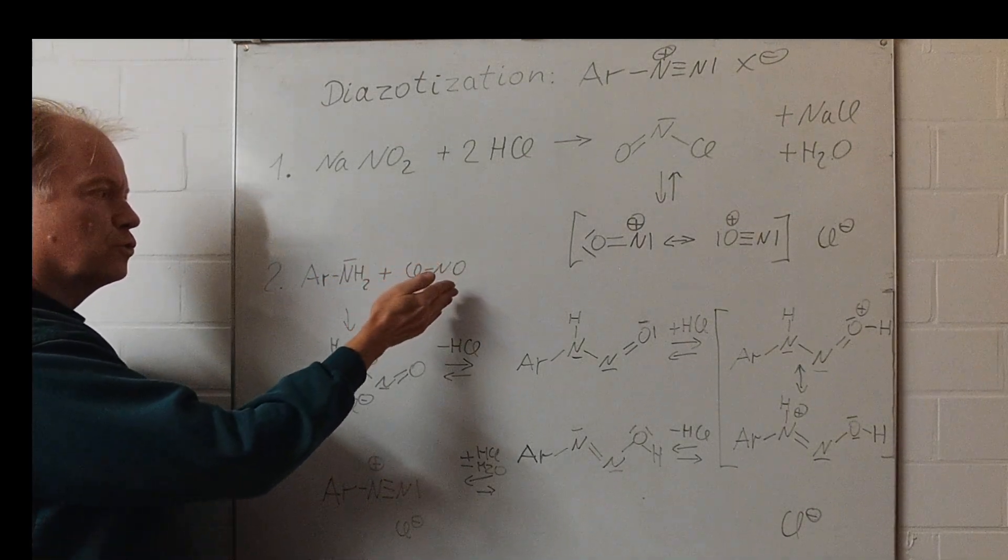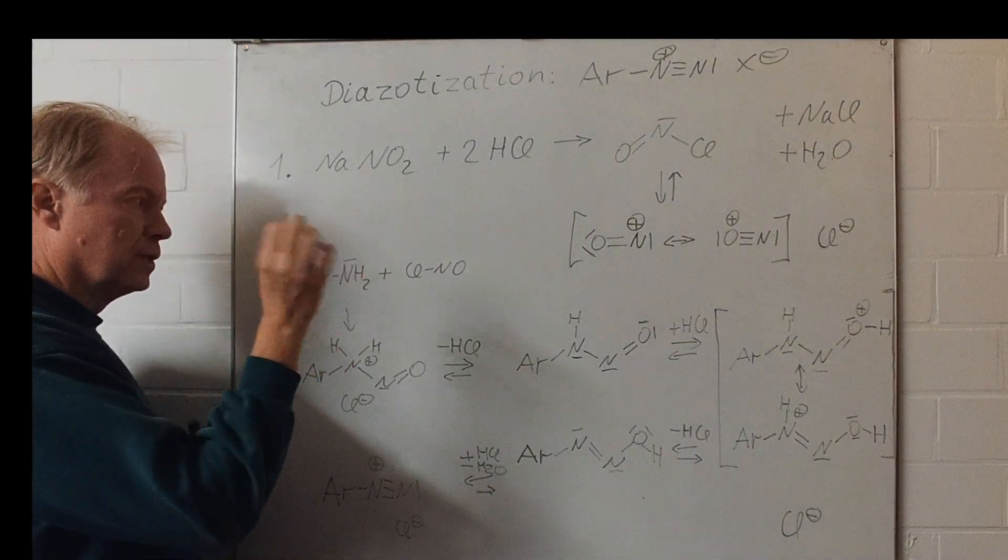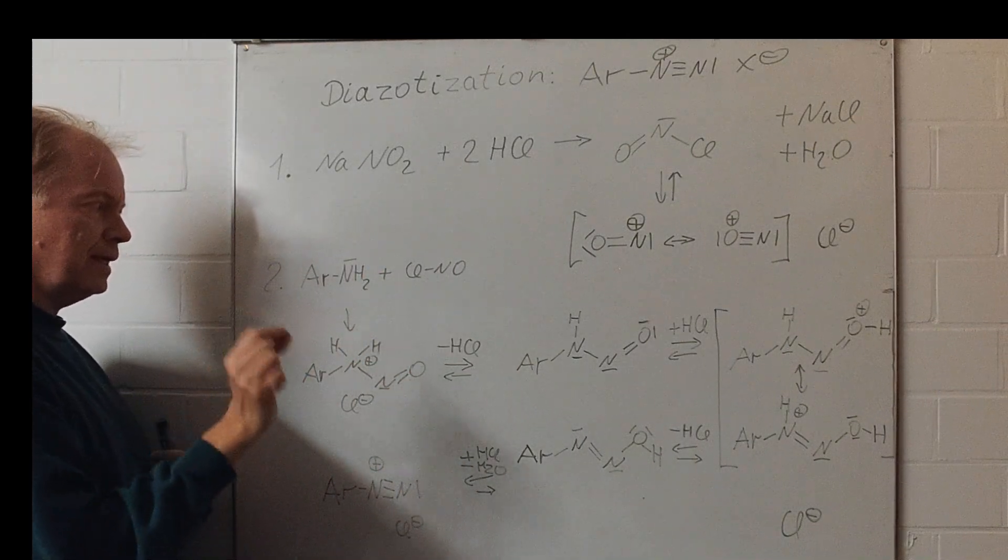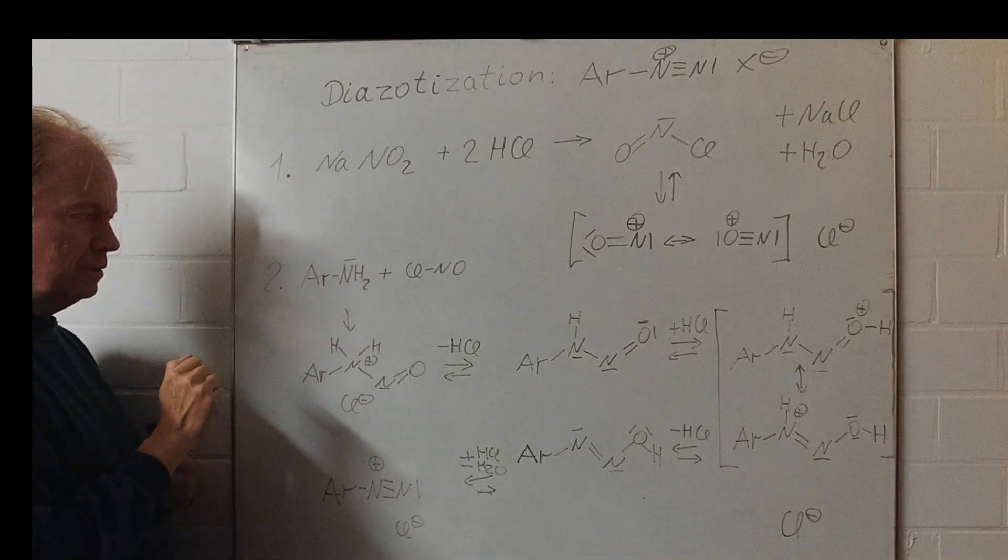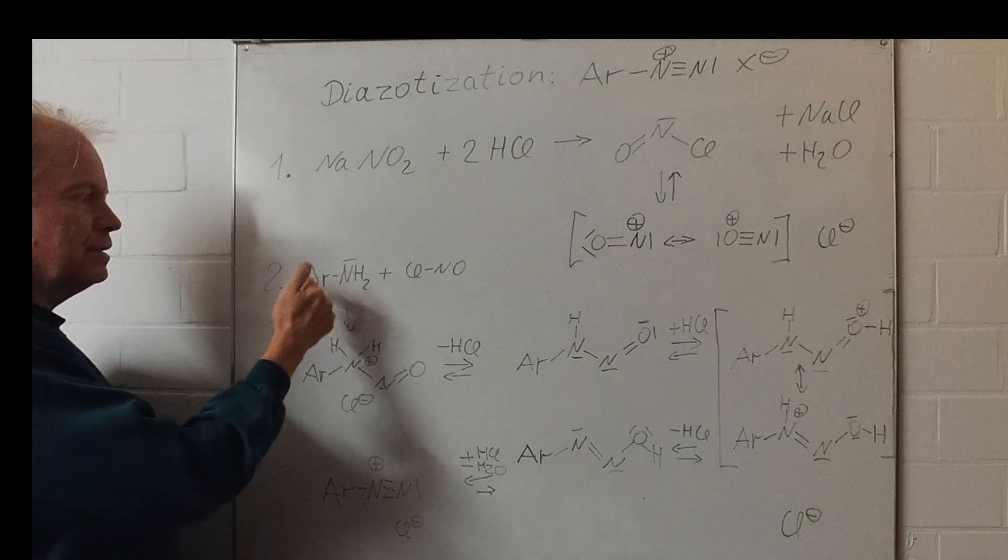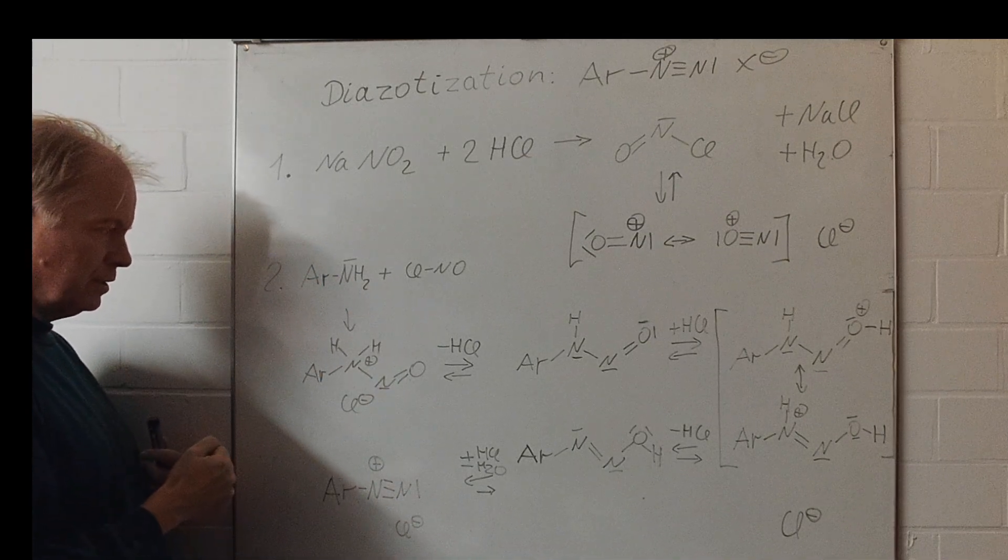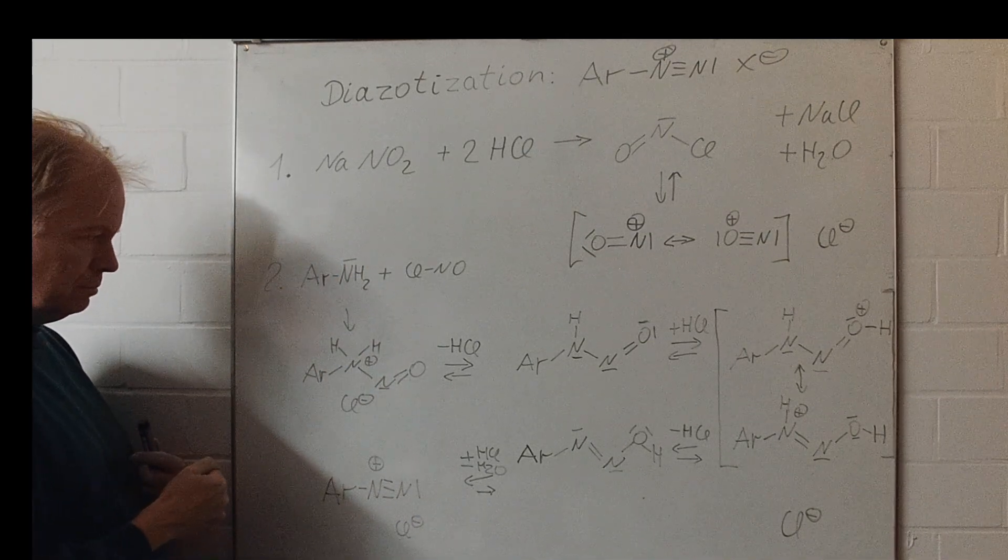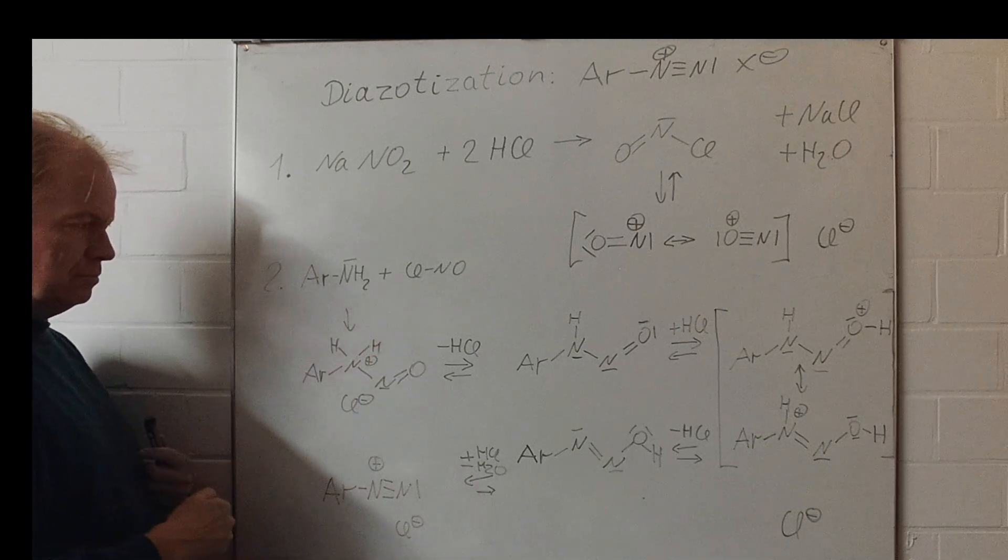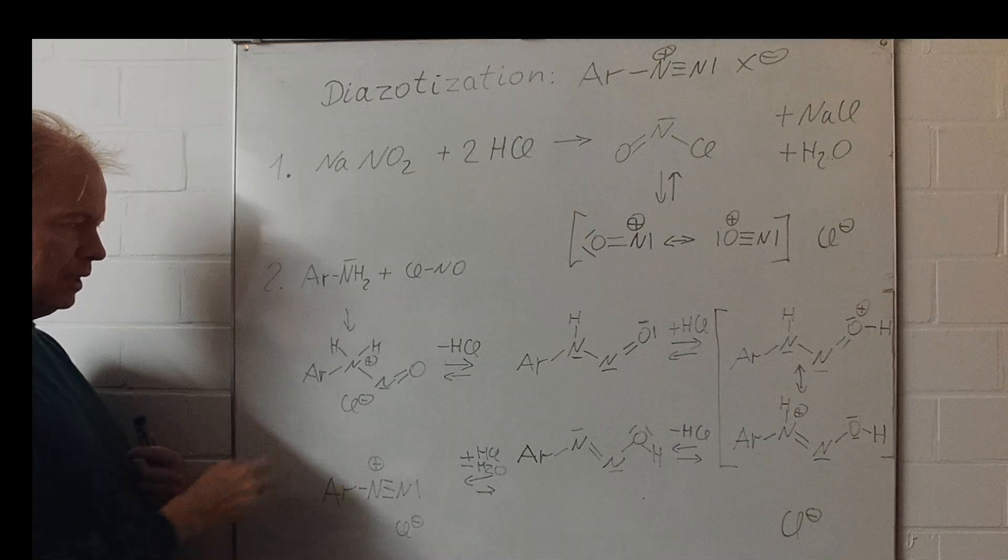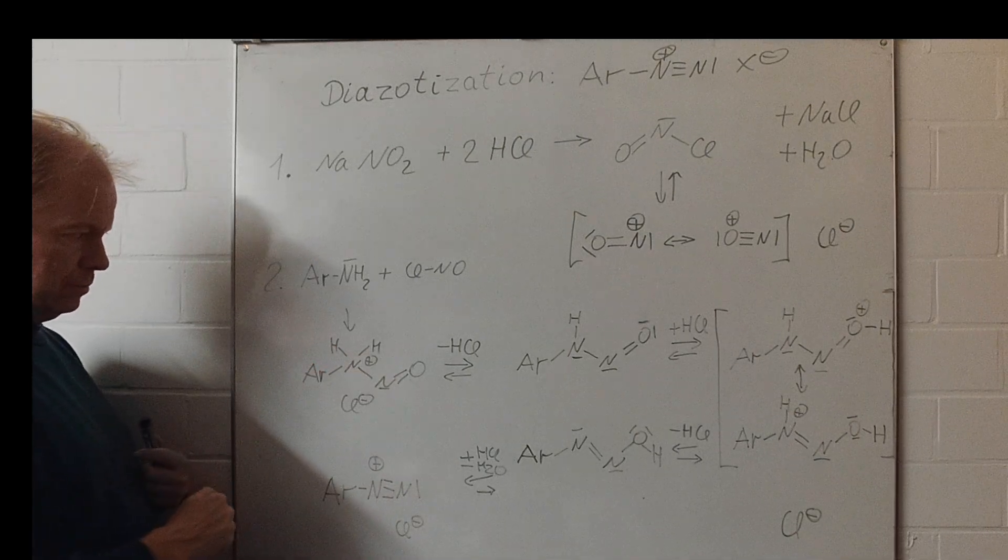Nitrosyl chloride, nitrosyl cation as the electrophile, will attack at the free electron pair of that aniline functionality, primary amine. And then this cation is formed, an ammonium salt.